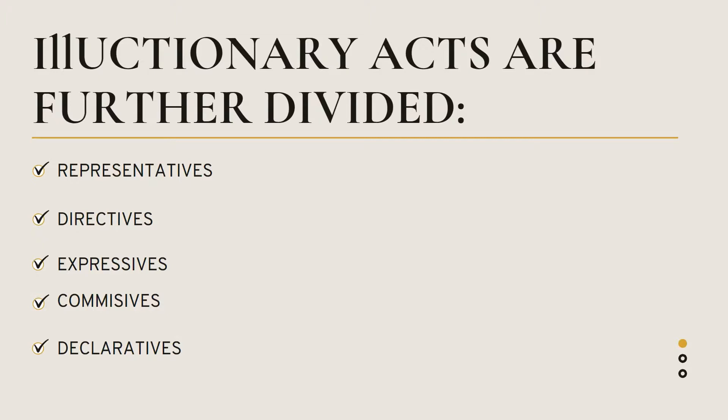The fifth type is declaratives. In declaratives, the speaker changes circumstances through their utterance — these are orders. There is a slight difference between directives and declaratives: in directives, the listener has a choice of whether to accept the request or not. For example, if you say 'Bring me a glass of water,' it depends on the listener. But in declaratives, the listener has no option — there is a relation like that of boss and servant.